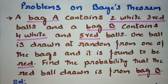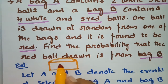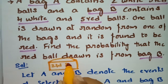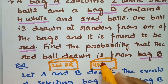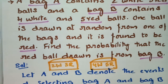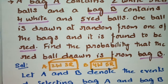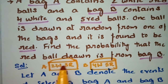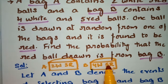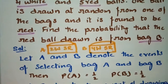In Bag A we have two white and three red balls. In Bag B we have four white and five red balls. Among Bag A and Bag B, one bag is selected and it is found to be red. The probability of drawing red from Bag A is three out of five, and from Bag B is five out of nine.